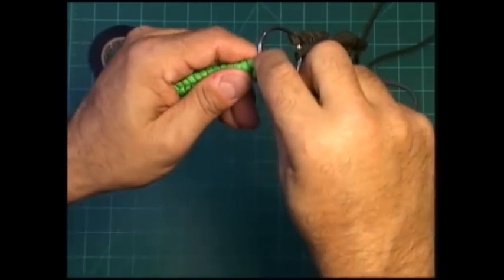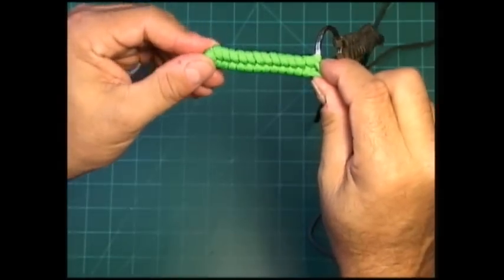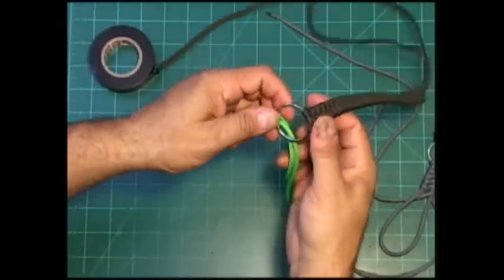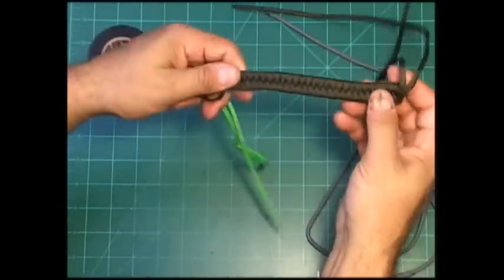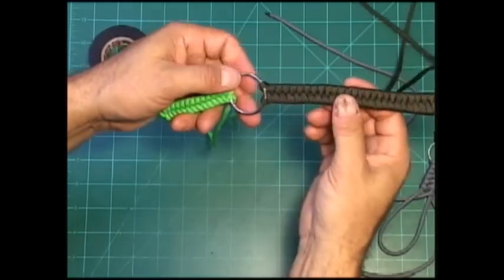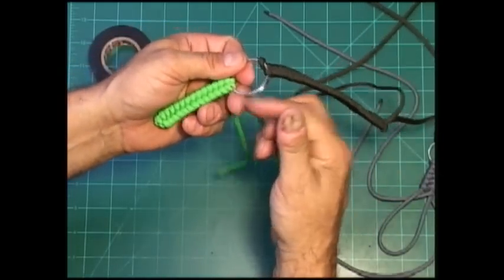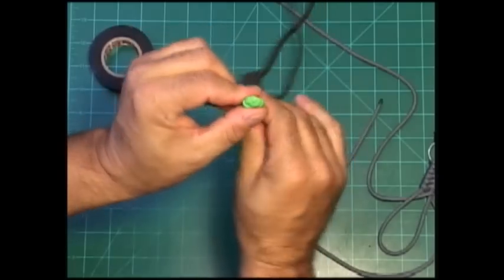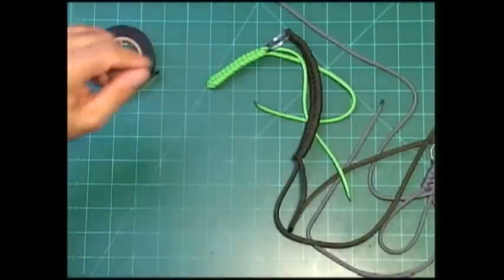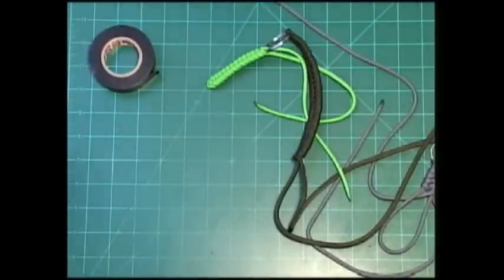So this is the Paracord Weaver, we just wanted to do a quick little video to help Wes out. He needed to know how to attach this fishtail to a ring and have a finished end like this. So it's the Paracord Weaver, we hope it was informative and we'll see you next time.